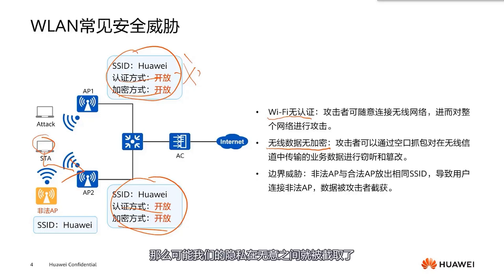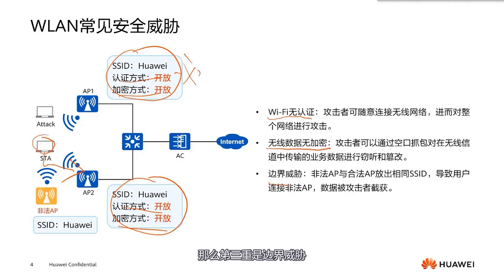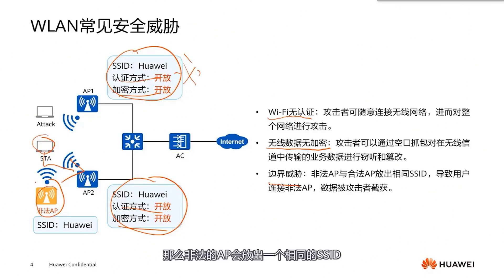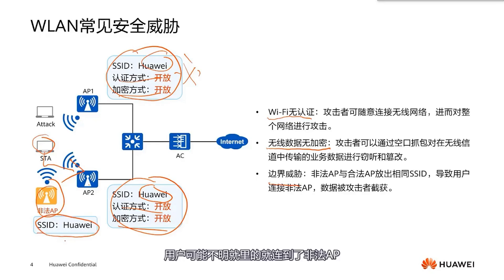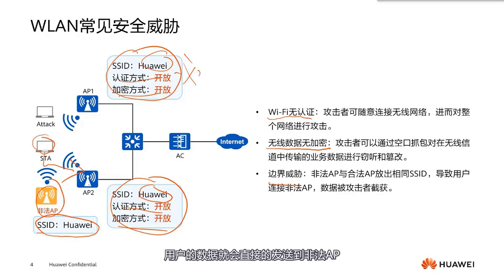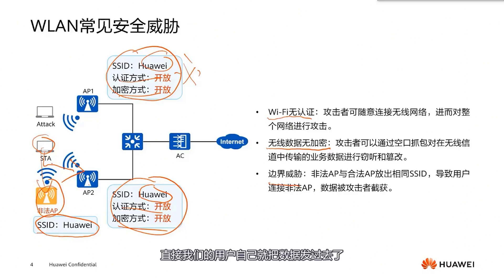The third layer is boundary threats. Here we see an illegal AP which broadcasts the same SSID. For example, the SSIDs of AP1 and AP2 are both Huawei. These two APs are legitimate, but there is an illegal AP which also uses the Huawei SSID. Users may unknowingly connect to this illegal AP, and their data will be directly sent to this illegal AP. The hacker doesn't even need to perform air interface packet capture — users will voluntarily send their data over.